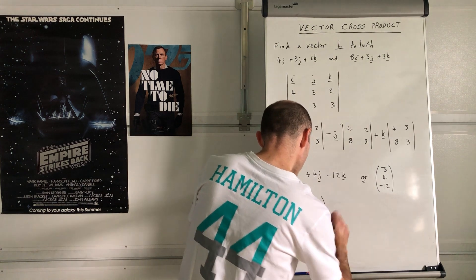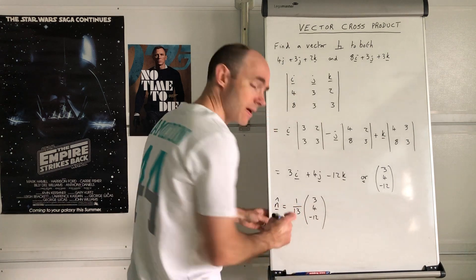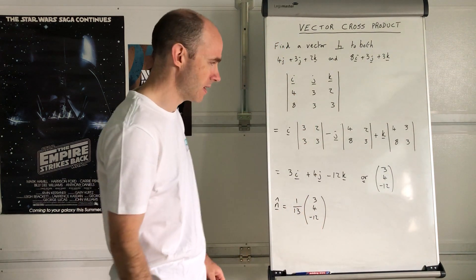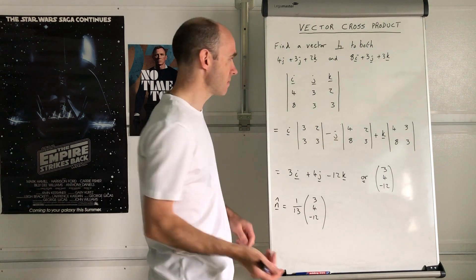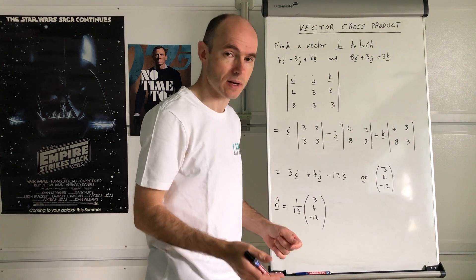That is what the n hat would be in that formula I gave you right at the beginning. The rest of it, the mod a mod b, that's just the modulus of that and the modulus of that, then you've got sine of the angle.